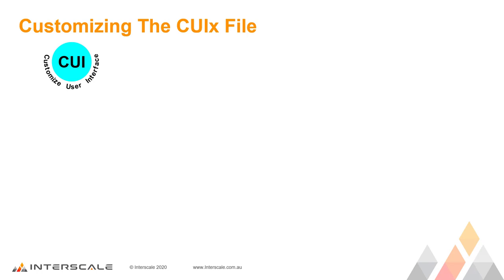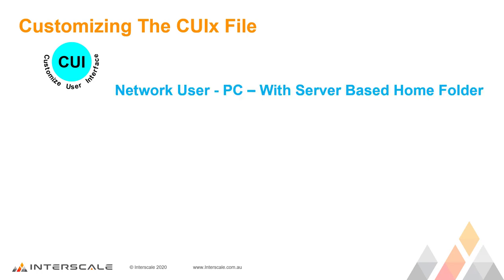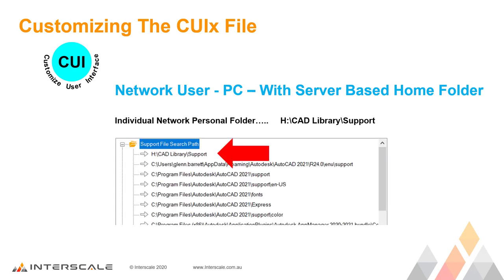The third option is if you are a network user working on your PC with a server, and you are allowed to work on your own customized CUIX file. More often than not, users have a personal drive on the server, normally the H Drive. Create a subfolder called CAD Library, and another subfolder under that called Support. Save the new CUIX file into here. In AutoCAD, go into Options and add this new path to the top of your Support File Search Paths. Remember, this file can be customized by each individual user to suit their requirements, and any editing does not affect other users.